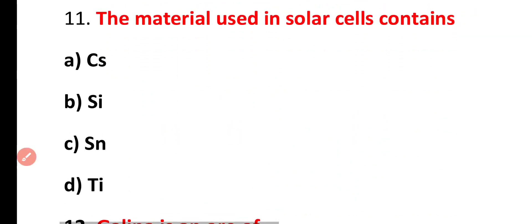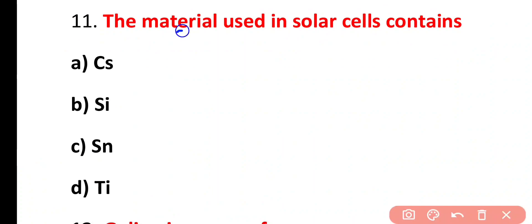Question number 11. The material that is used in solar cells contains cesium, silicon, tin or titanium. Correct answer is option B. Silicon is used as a semiconductor material in solar cells.